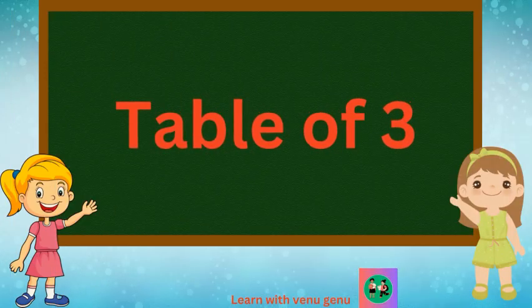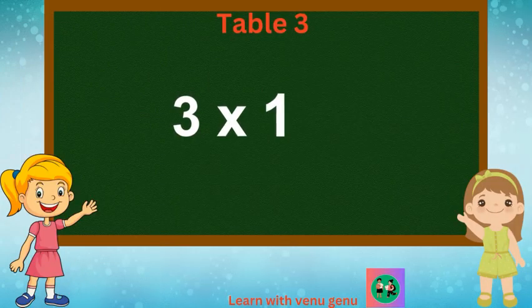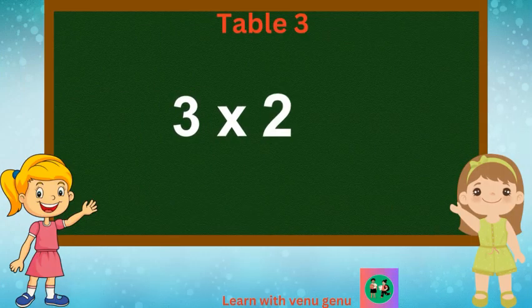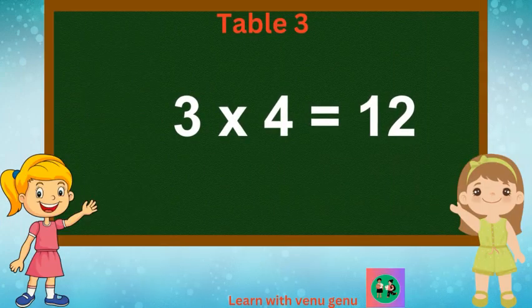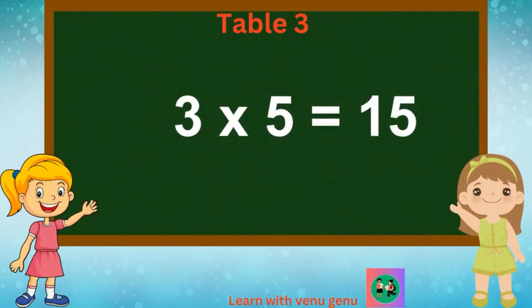Table of 3. 3 1s are 3. 3 2s are 6. 3 3s are 9. 3 4s are 12. 3 5s are 15.